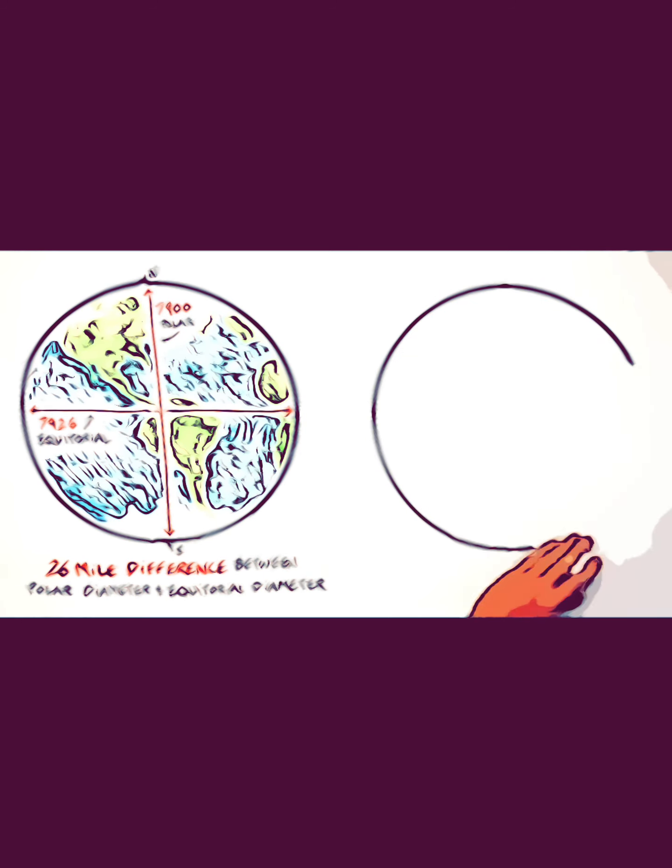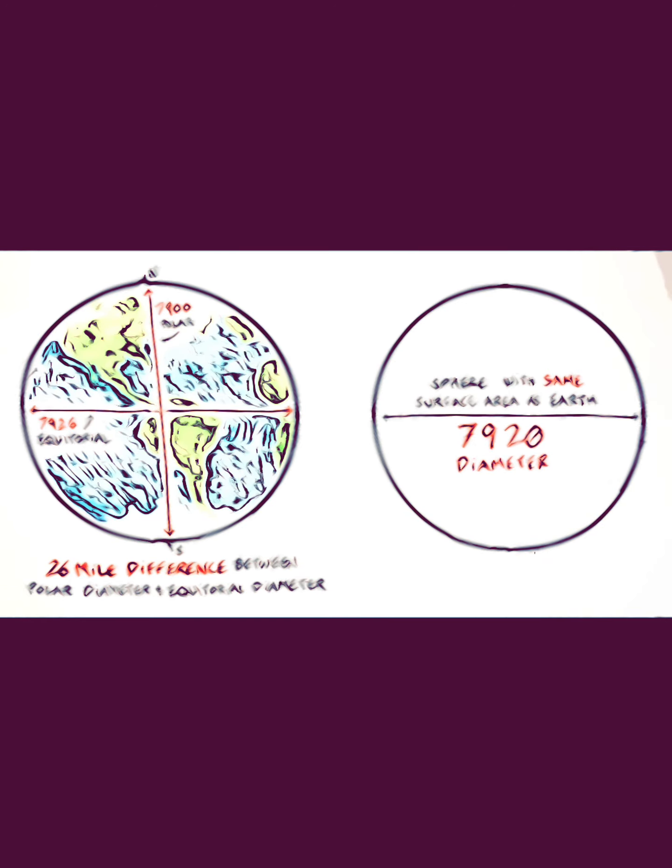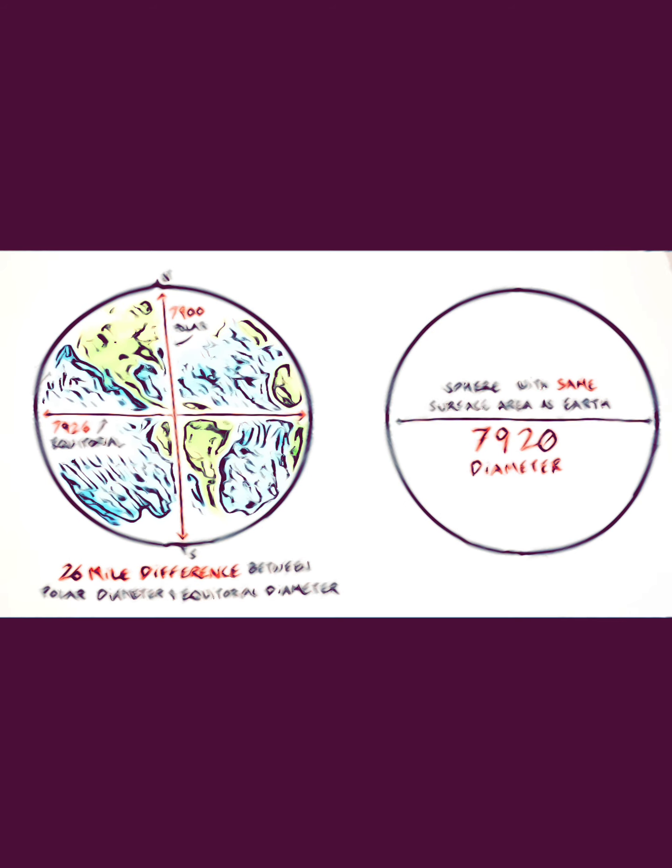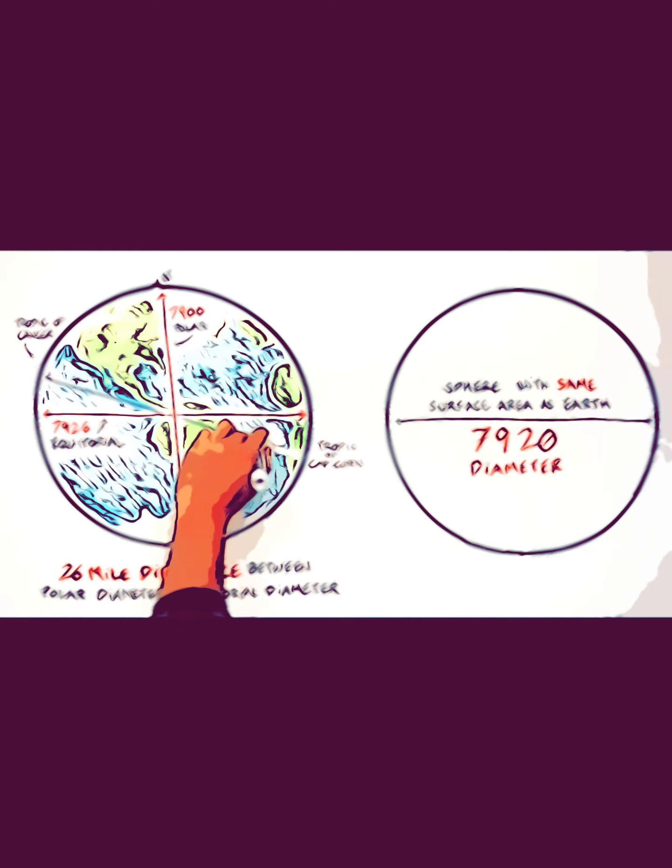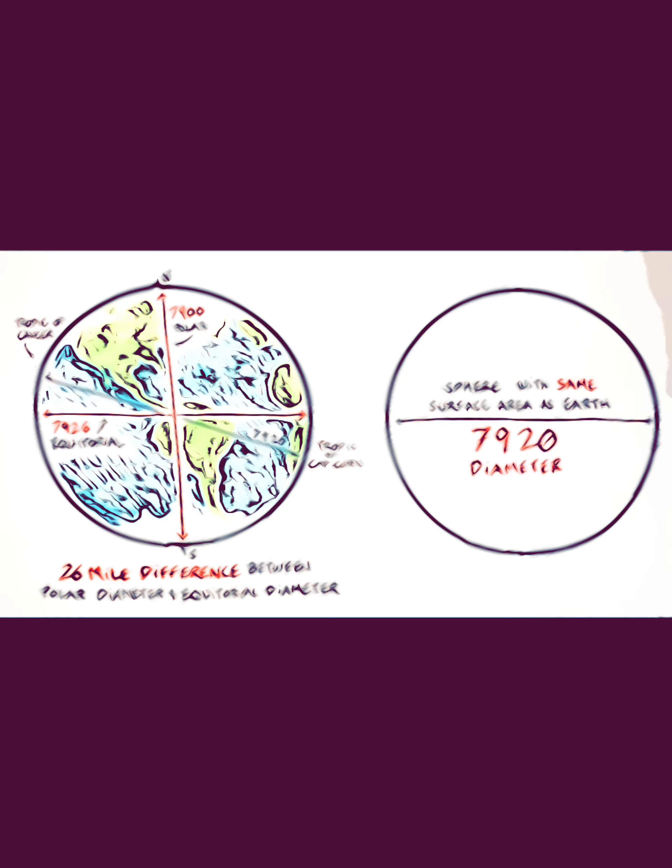The diameter of a sphere with the same surface area as Earth is 7,920 miles. Also, the Earth's diameter sliced through the Tropic of Cancer to the Tropic of Capricorn is about 7,920 miles. We use 7,920 as the sacred number representing Earth because, despite Earth's variation between equatorial and polar diameters, this significant piercing from tropic to tropic is 7,920 miles.